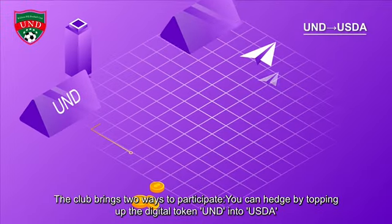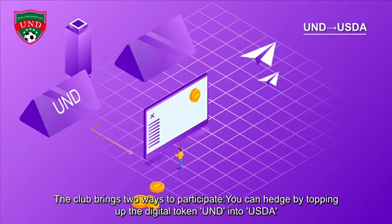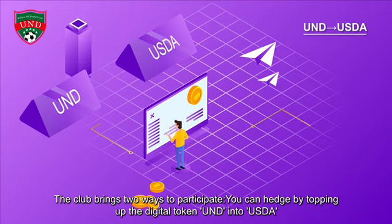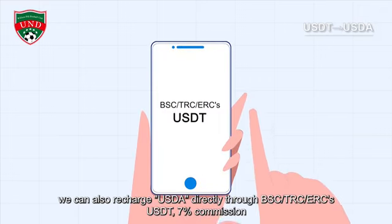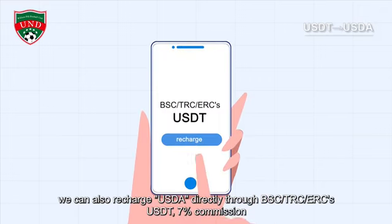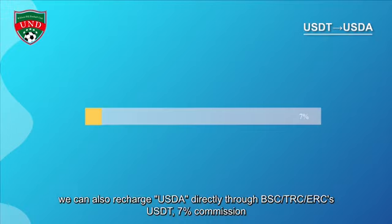You can hedge by topping up the digital token UND into USDA for a custodial fee of only 1%. We can also recharge USDA directly through BSC, TRC, or ERC's USD with a 2.7% commission.